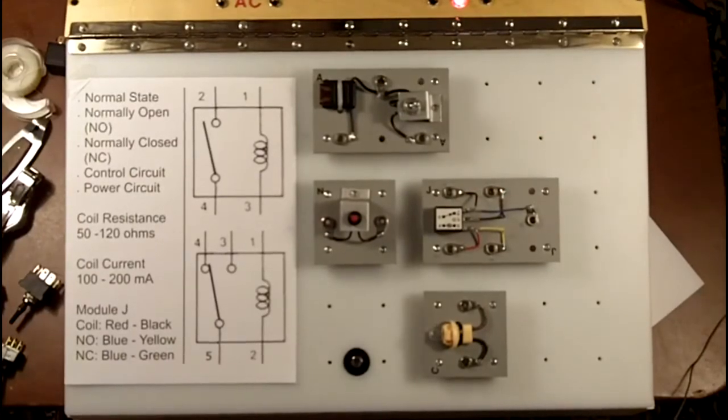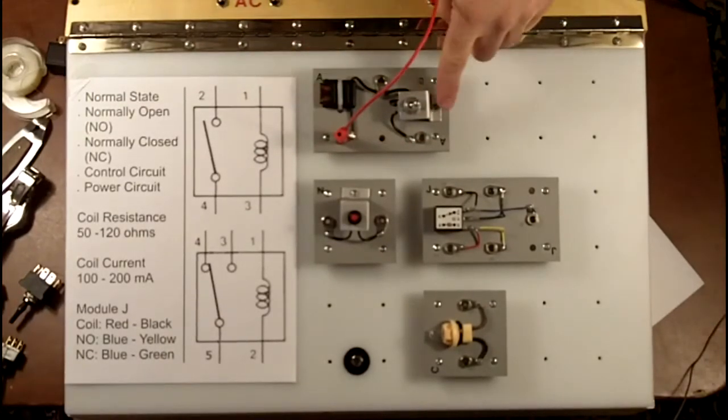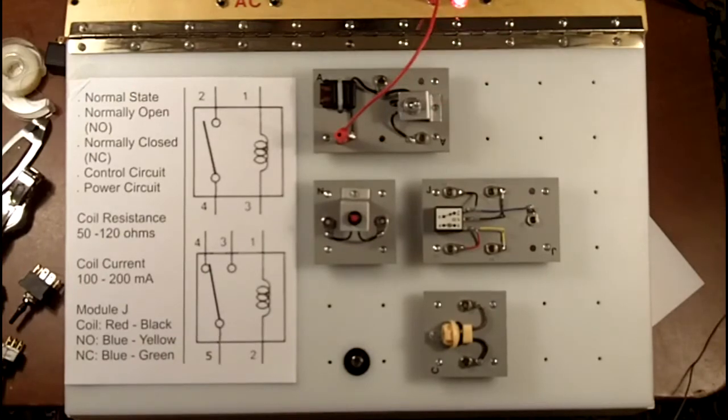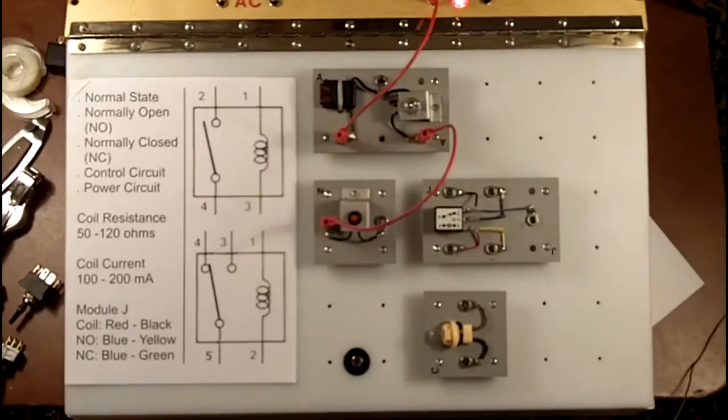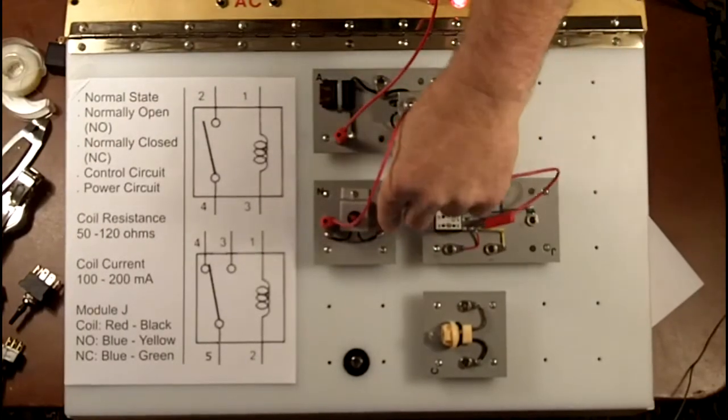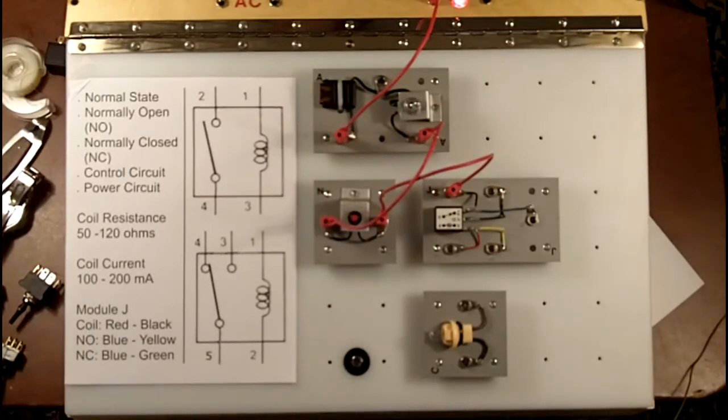So we're going to just do a simple circuit here. Just bring in and start with our control side. So we'll bring power in through a fuse and come off of a switch here for the whole project. And we'll come in, we'll come into our switch, a push button momentary switch, and then we'll go through the winding. And I'll color code this.